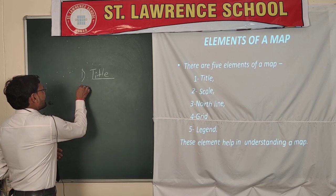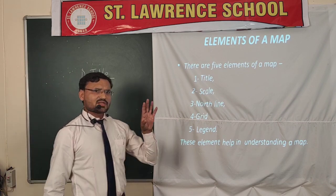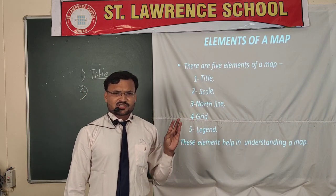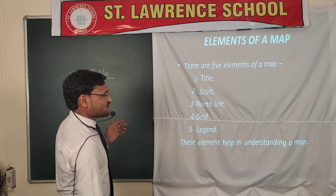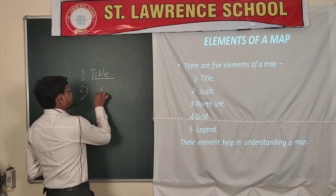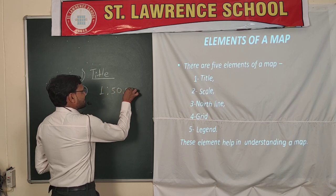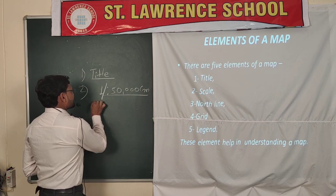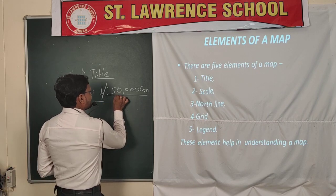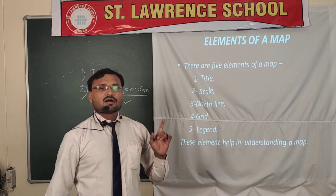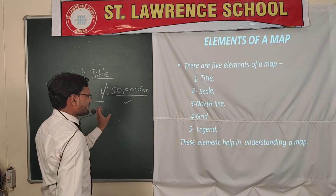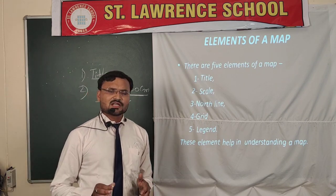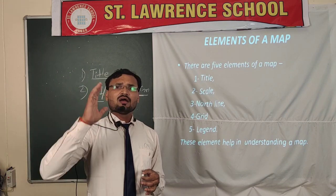Second is scale. Every map must contain a scale. There are three types of scales: one is the linear scale, second is the representative fraction, and third is the verbal scale. For example, a scale of 1:50,000 means one centimeter on the map represents 50,000 centimeters on the actual ground.